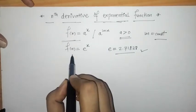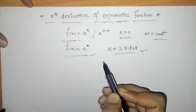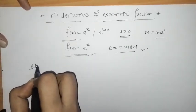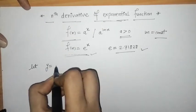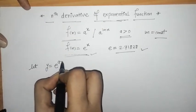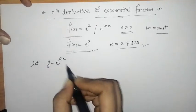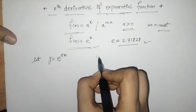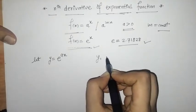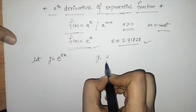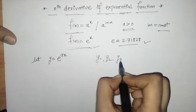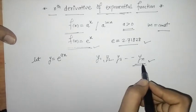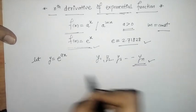Now first we have to find the nth derivative of this function. For this, let y equal e raised to ax, where a is a constant. We have to find its nth derivative, meaning we first find y1, then y2, y3, up to yn. This process is called successive differentiation.